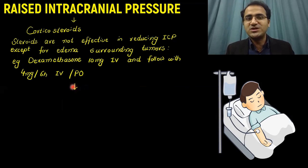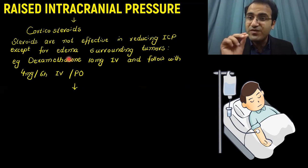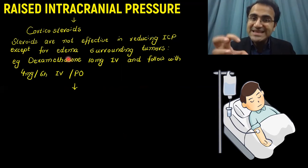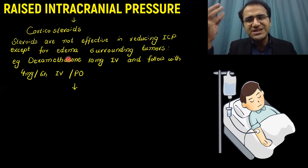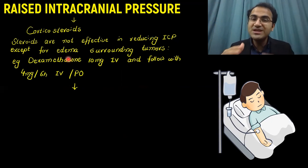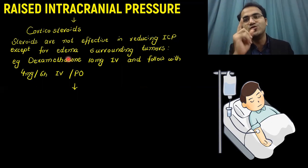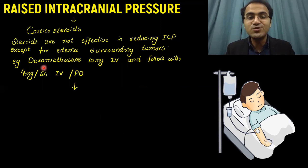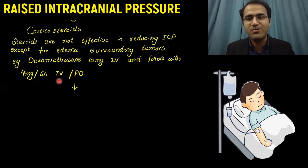Corticosteroids are not effective at reducing intracranial pressure generally; they are only effective in reducing edema surrounding tumors. If a tumor is causing cerebral edema and raised intracranial pressure, you can give dexamethasone 10 mg IV, followed by 4 mg every 6 hours IV or orally.